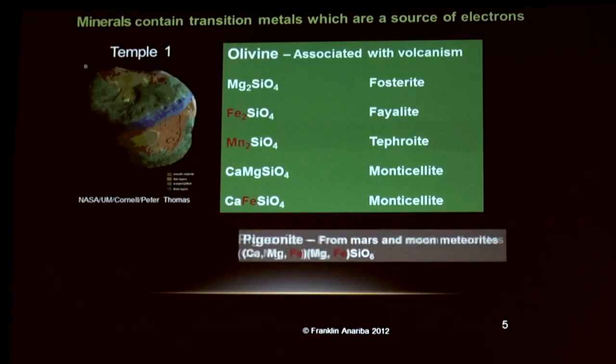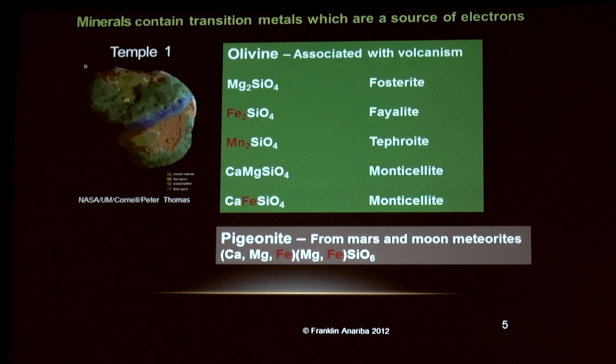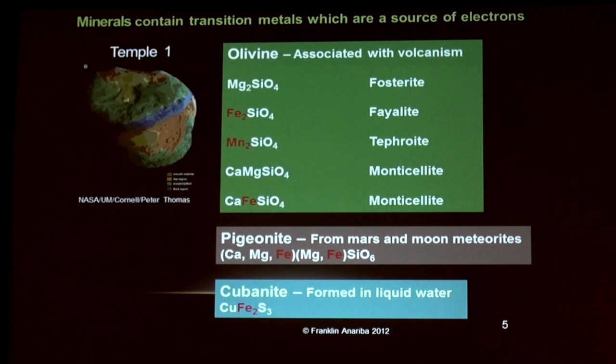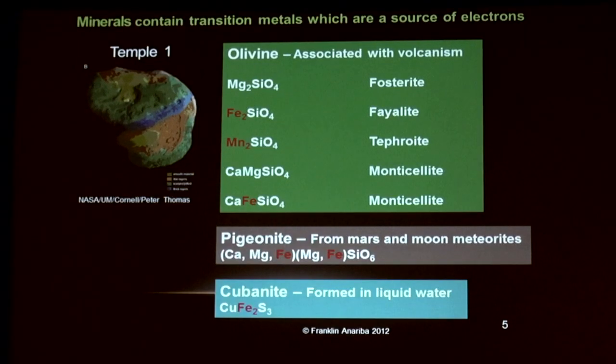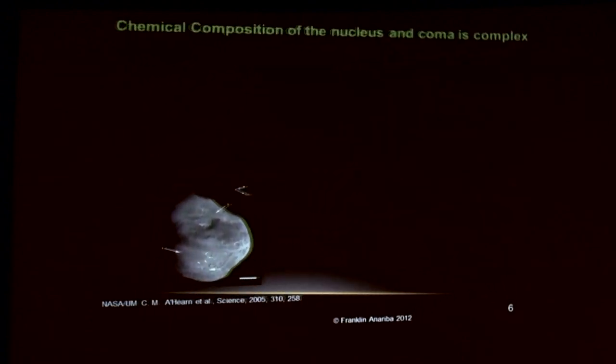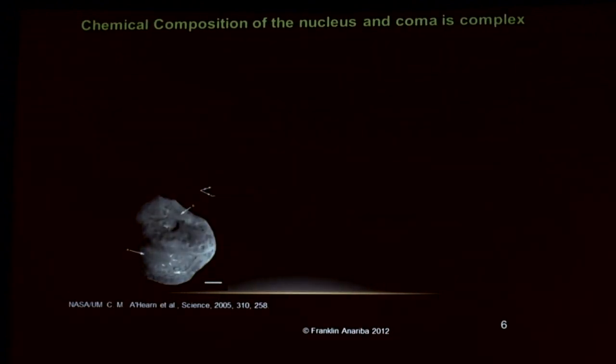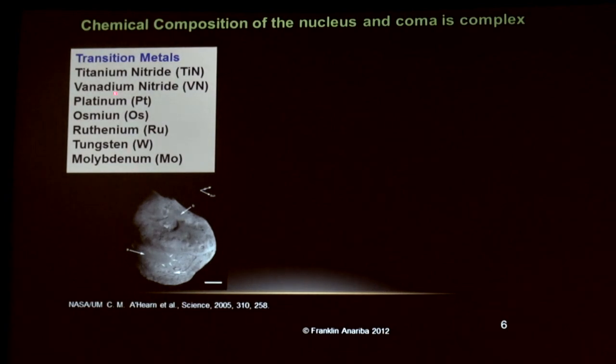Transition metals are important in electrochemistry because either they provide an inert surface or they provide electrons. They're easy to reduce and oxidize. They have various oxidation states. Another point I want to pinpoint here is that this is all silicates. Silicon and oxygen. Silicon and oxygen are very abundant. Oxygen is a very rich atom, electron-rich, which can also provide electrons to provide current provided you have a potential difference. Another example is pigeonite associated with Mars and moon meteorites. Again, very rich in iron. Cubanite, copper, iron, and sulfur form in liquid water. This has been found in comets. This is very interesting because that means very complex chemistry going on here, also rich in iron.